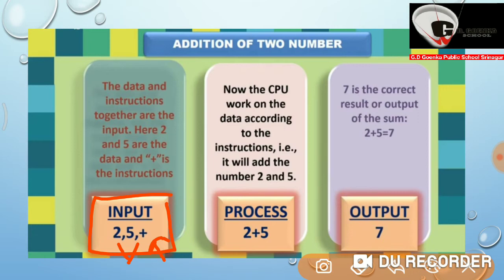After that, CPU works on the data according to the instructions. That is, it will add the numbers 2 and 5. This is known as the process.